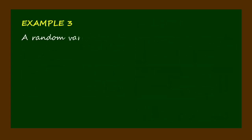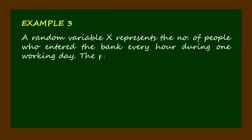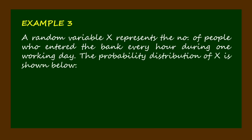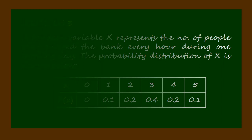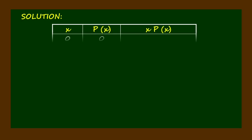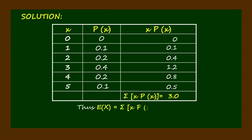Example three: A random variable x represents the number of people who entered the bank every hour during one working day. The probability distribution of x is shown below. The solution is shown in the table, and the mean or the expected value is 3.0.